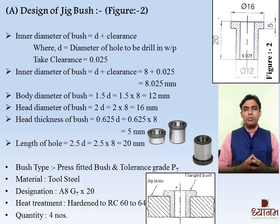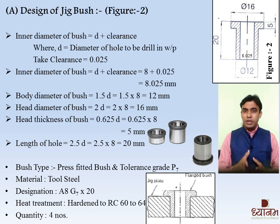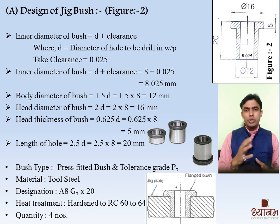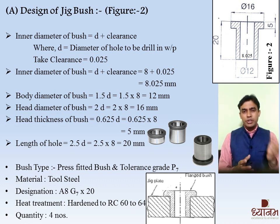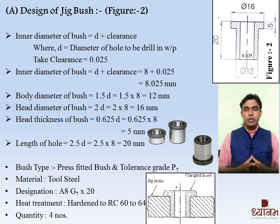You can observe in the figure that we have press-fitted the bush into the Jig plate. Here we have used a press-fitted bush. The material of bush is tool steel. The designation of bush is A8 G7 20. We have already provided heat treatment to the bush, so we will use heat-treated bush between 62 and 64 HRC — that is Rockwell hardness. As we have to drill 4 holes, we are going to use 4 numbers of Jig bush.